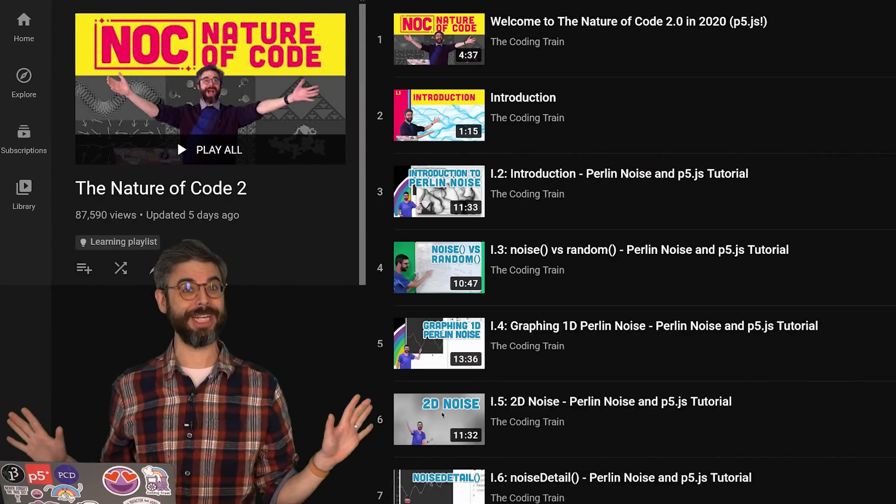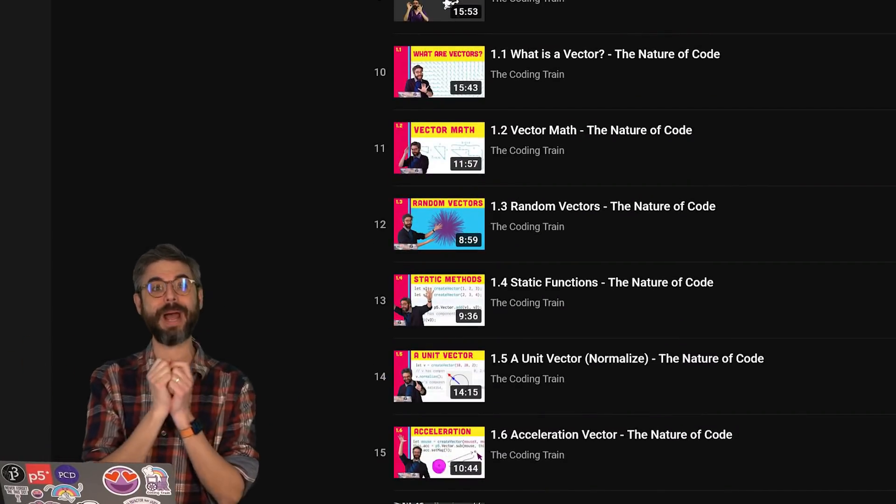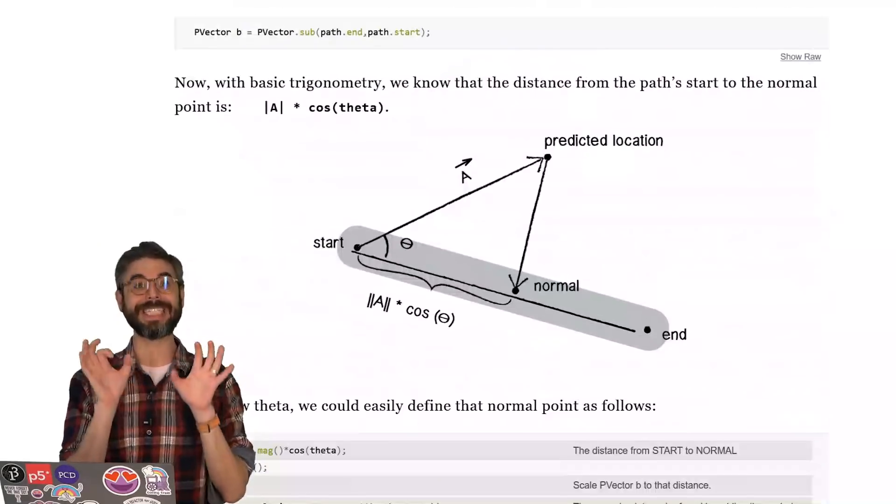This video could have been in chapter one of the Nature of Code playlist because it is about a specific piece of vector mathematics, the dot product, and a concept known as scalar projection.